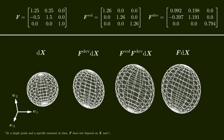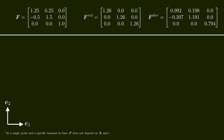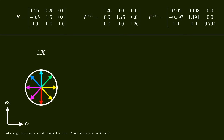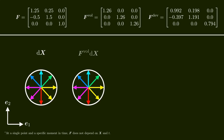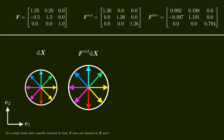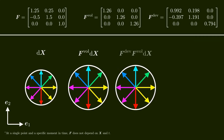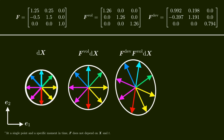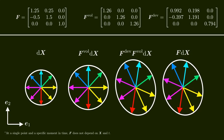Before we move on, note that the volumetric-deviatoric decomposition has the special property that it doesn't matter in which order we apply the volumetric and deviatoric transformations — we can also apply the volumetric transformation first, followed by the deviatoric transformation. But this is only possible because the volumetric part of F is a scalar multiple of the identity matrix. In general, matrix-matrix multiplications are not commutative.